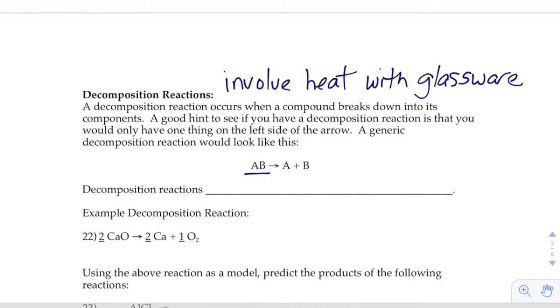So, if A plus B going to AB was like a marriage, what's this one? Divorce. Oh, divorce. Oh, no, they couldn't get along.